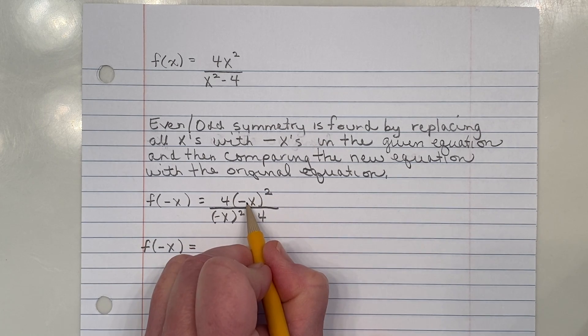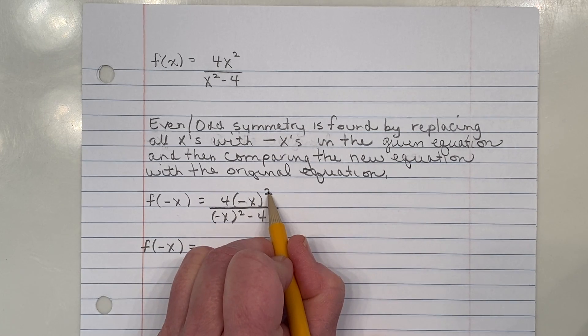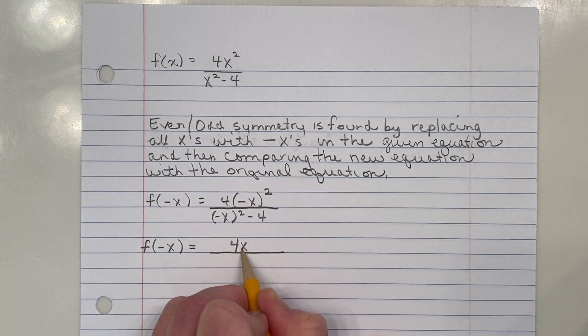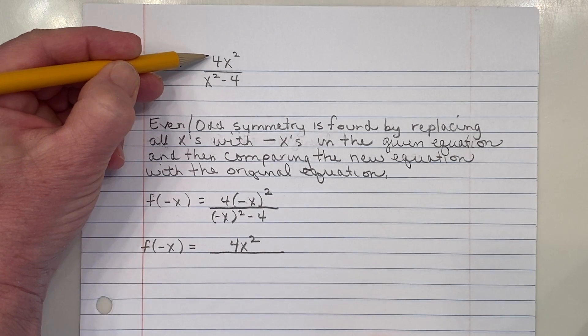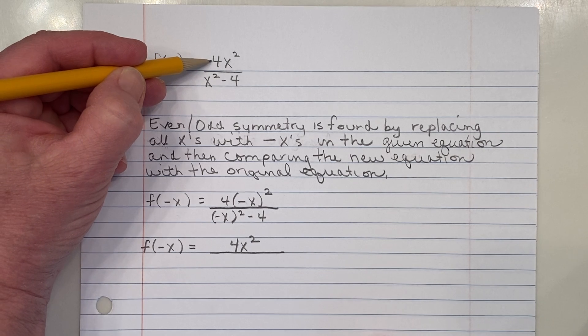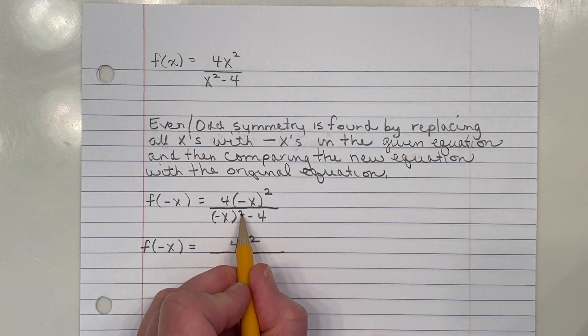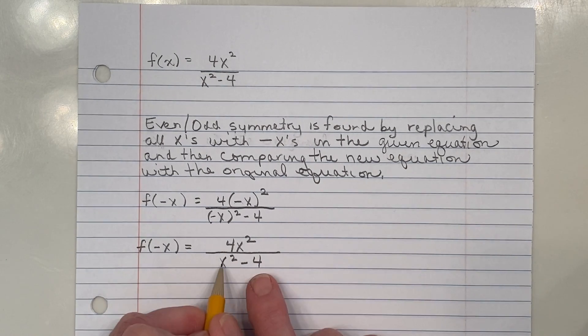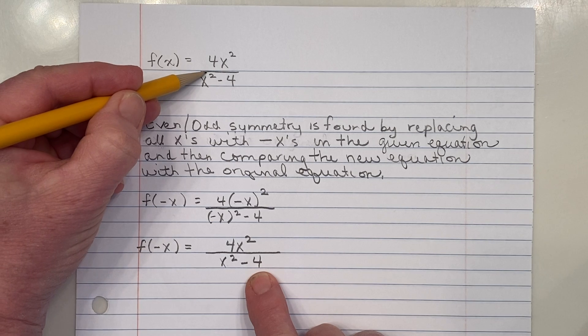So now let me come over here and clean this up. Meaning I'm going to go ahead and do the power first. So negative x times negative x will give us positive x squared. So our numerator actually returns to exactly what the original problem had in its numerator. And likewise here, when we square this, we're going to return to an x squared.